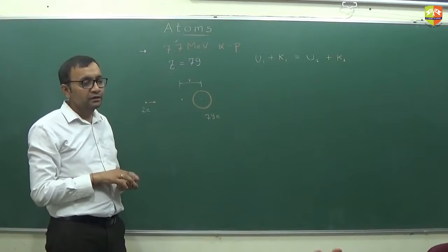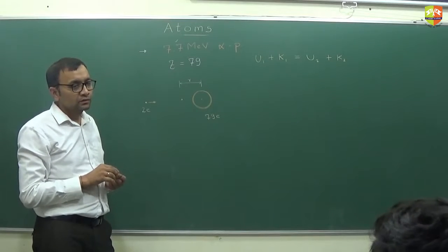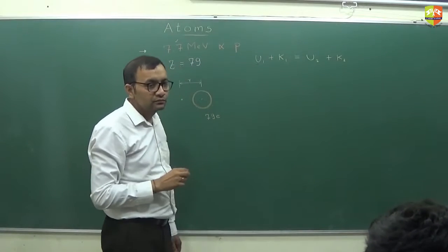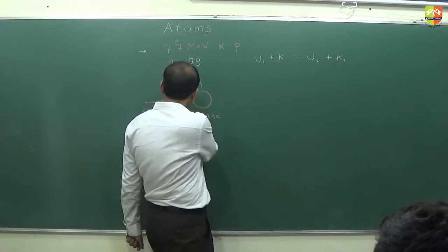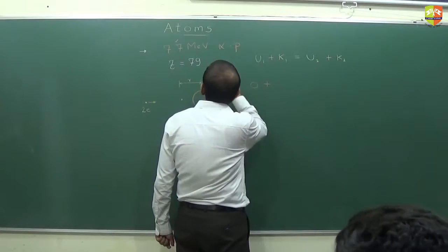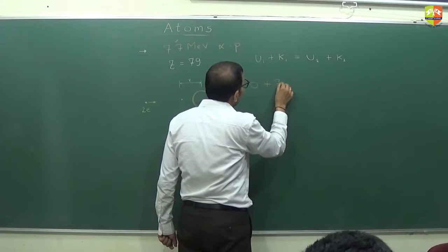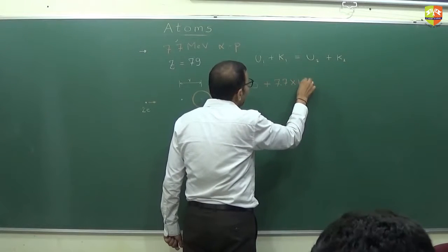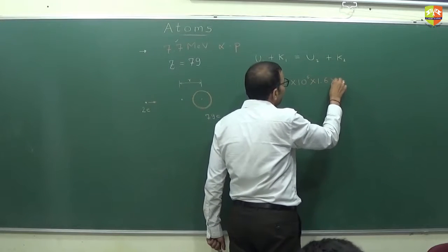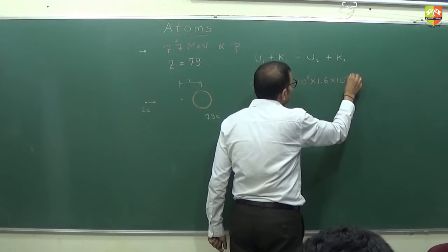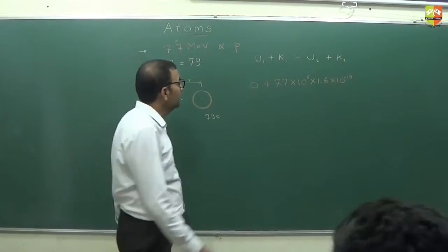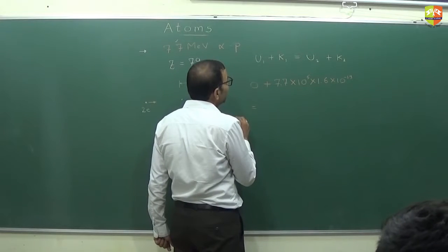What is the final kinetic energy? Zero — it comes to rest. Initial potential energy is also zero since they are infinitely separated. Initial kinetic energy is 7.7 MeV, which is 7.7 × 10⁶ electron volts — you multiply by the charge of the electron. So: initial KE + initial PE = final PE + final KE.